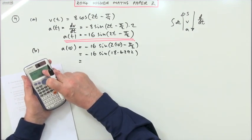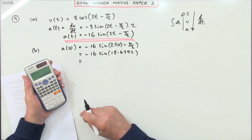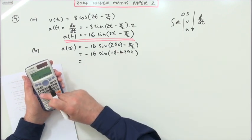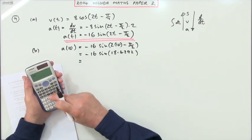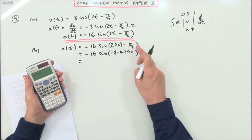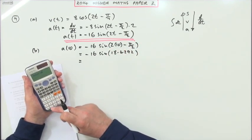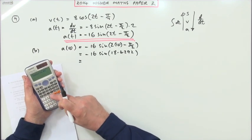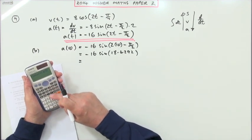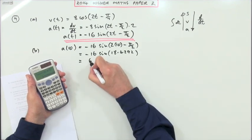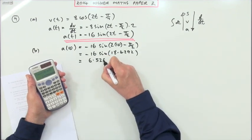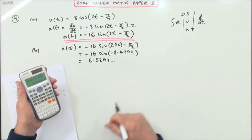Then making sure that it's in radians, change the mode to radians. What have you got? Negative 16 sine, and then either just going straight in with 20 - π/2 or that you get 18.4292, and you get 6.5293, and so on.